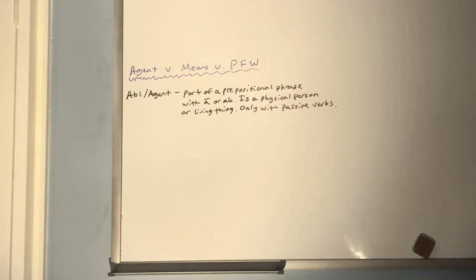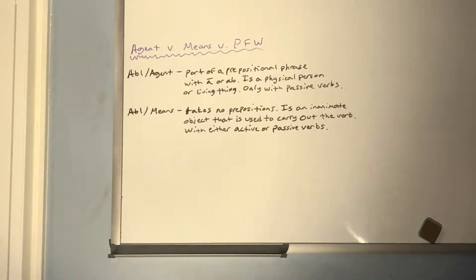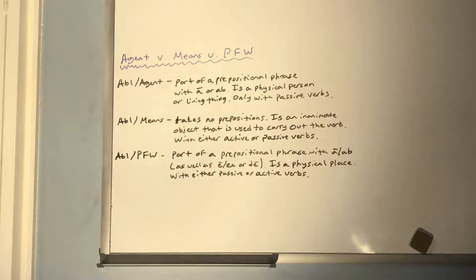To recap: ablative of agent is part of a prepositional phrase with 'a/ab,' involves a physical person or living thing, and can only be used in passive sentences. Ablative of means takes no prepositions, involves an inanimate object used to carry out the verb, and can be used with active or passive verbs. Ablative of place from which is part of a prepositional phrase with 'a/ab,' 'at,' 'ex,' or 'de' (meaning 'down from'), involves a physical place, and can be used with passive or active verbs.